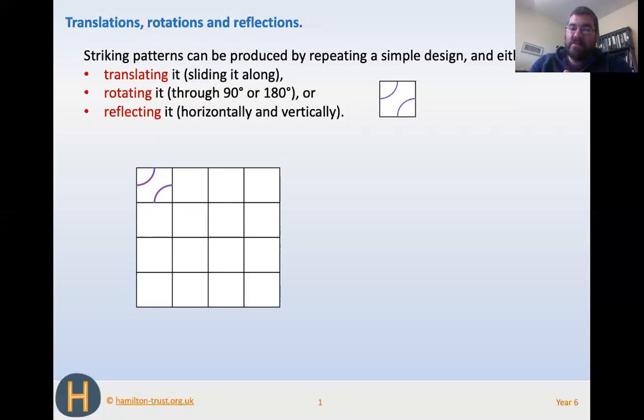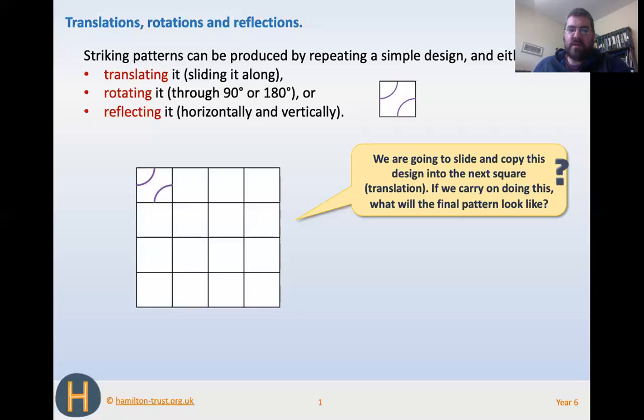You can see, here's a pattern, a very simple just two semicircles on the corner of the shape there. And these are going to be translated. We're just going to move the same pattern across each shape and see what we get. You can see it's not perfect when they've done it because they've done it on a computer, but you can do it better because you're going to be drawing it in your book.